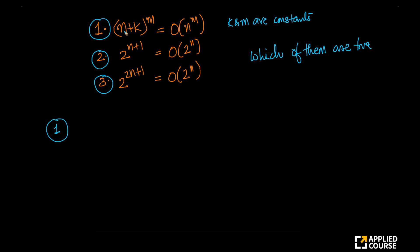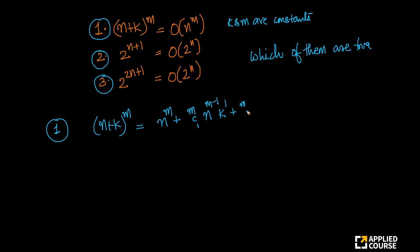Let us take the first one. The first one is (n + k)^m is order of n^m. Let us take the LHS and expand it. You can write this as n^m + mC1 · n^(m−1) · k + mC2 · n^(m−2) · k^2, and so on up to k^m. This is the binomial expansion — something we probably learned when studying combinations and permutations.